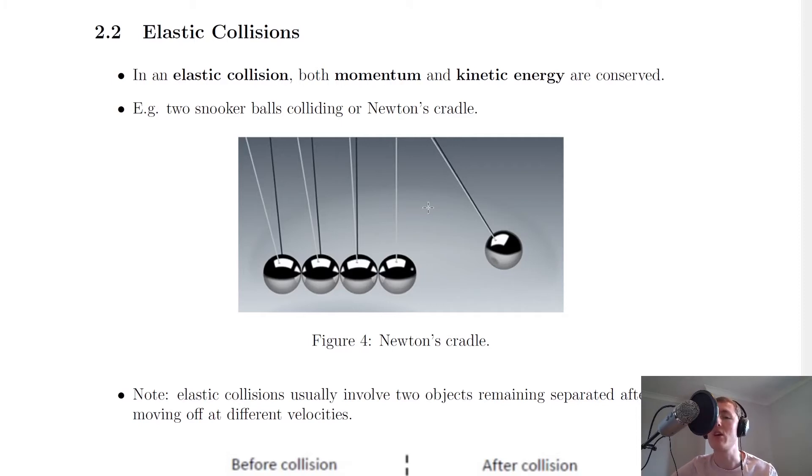So some of you might have seen this toy called a Newton's cradle before, where you move one of these balls back from the end and then let it go and it hits into here and transfers momentum through all the balls until it reaches the end one. And that means the momentum and kinetic energy is transferred to the ball over here, which can then move up.